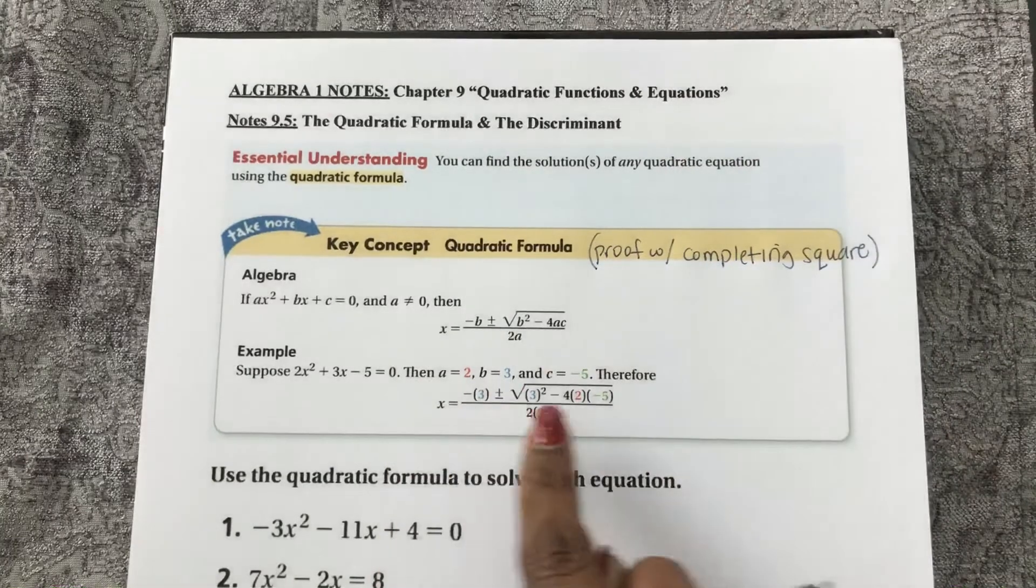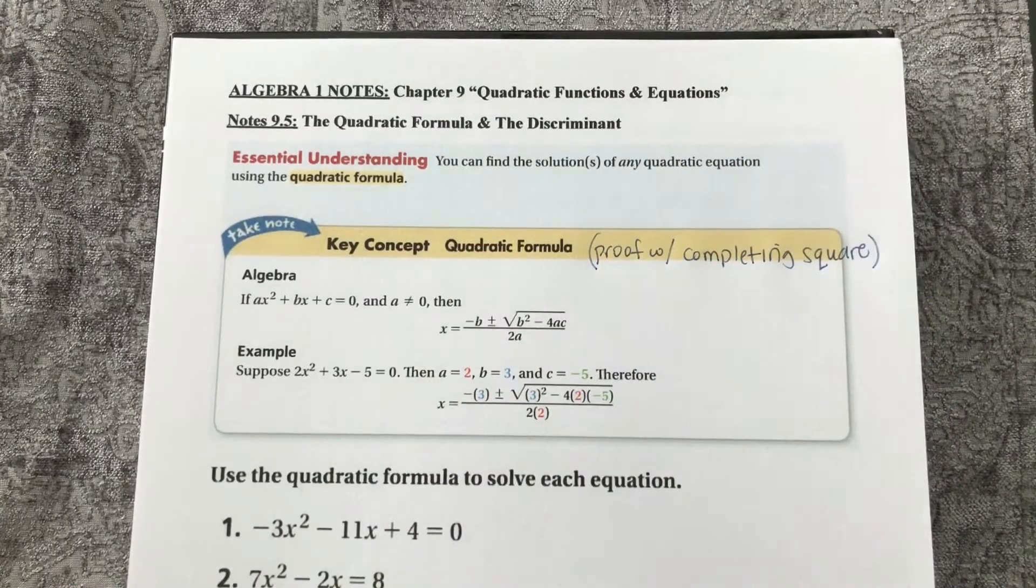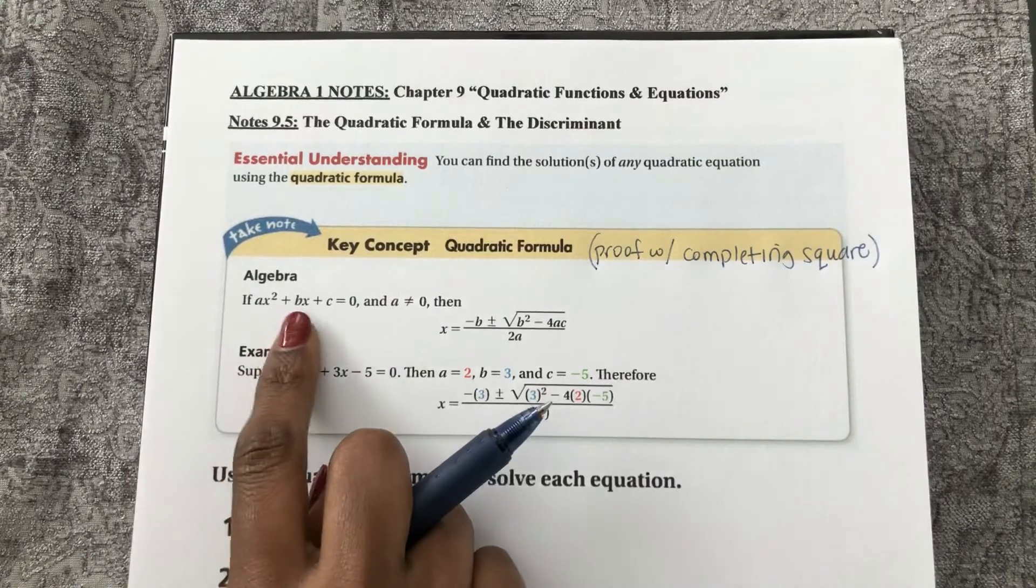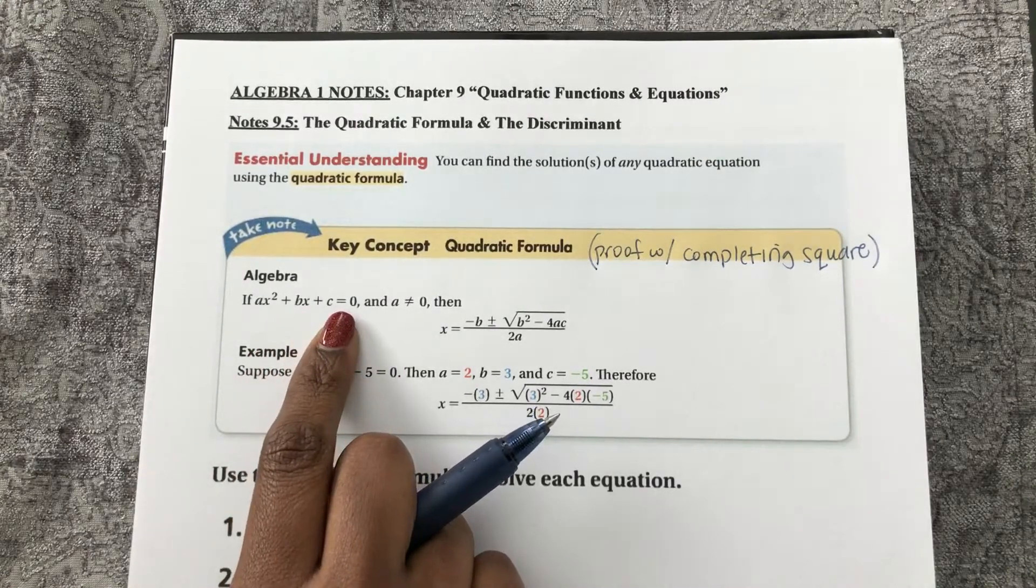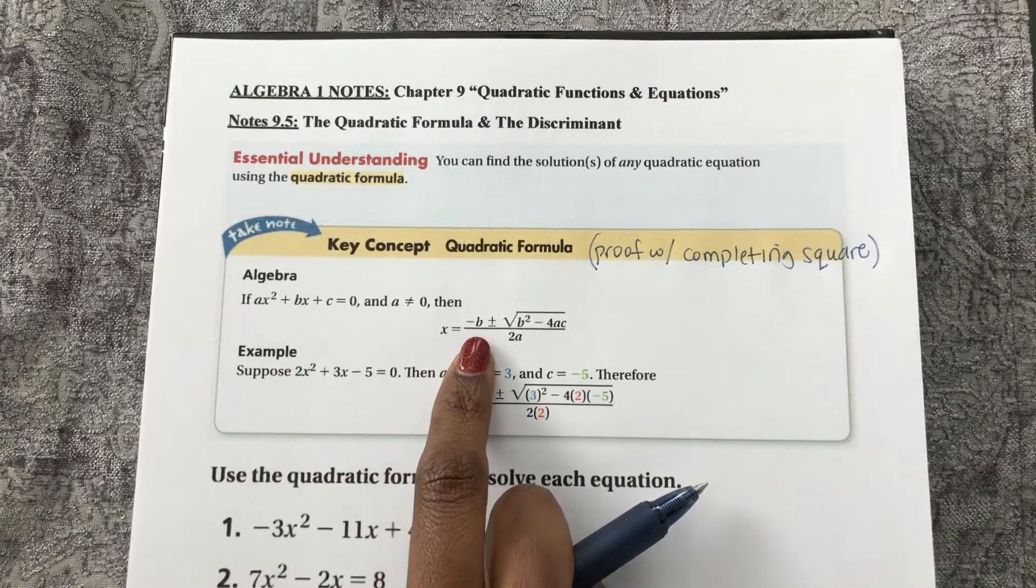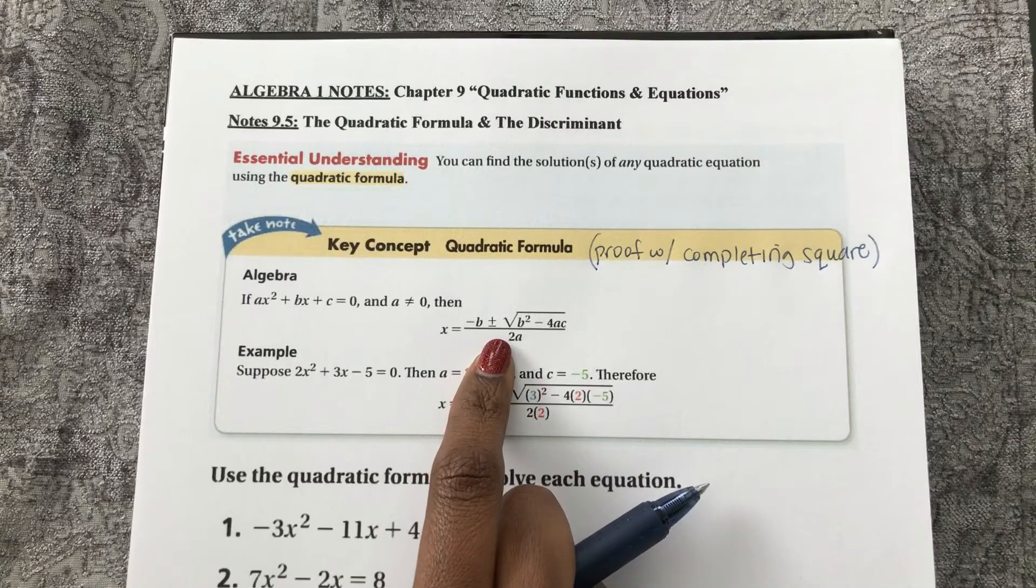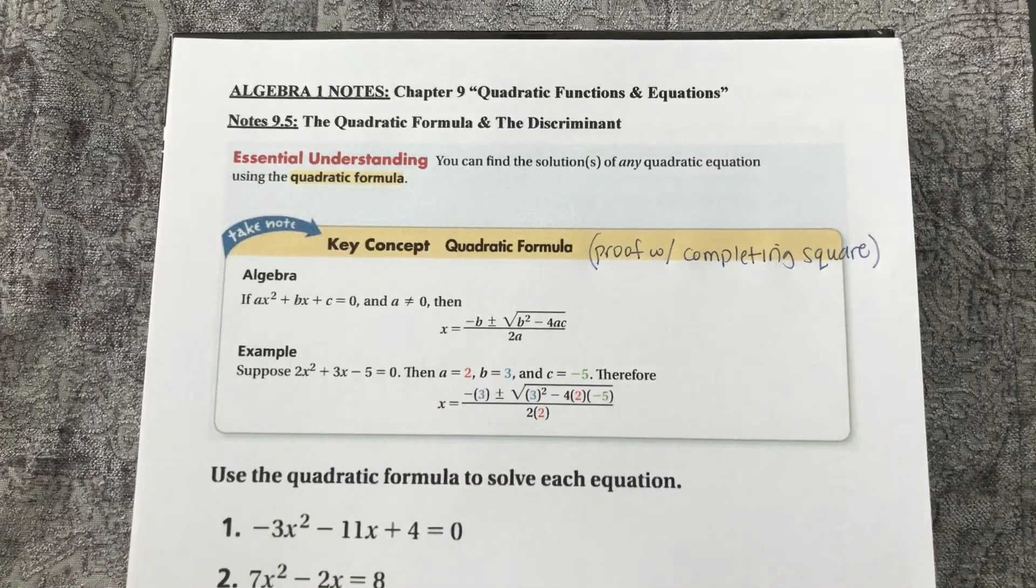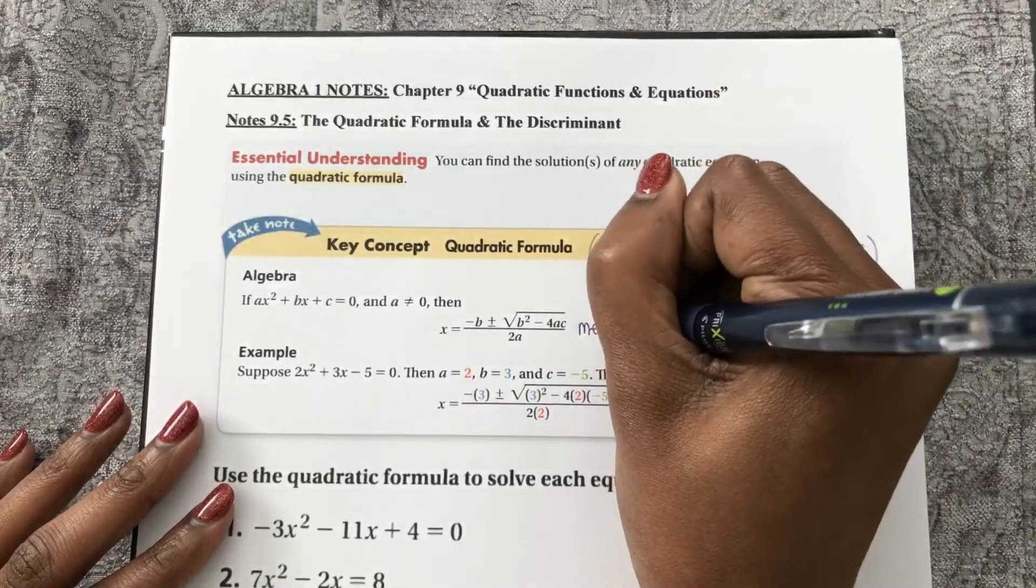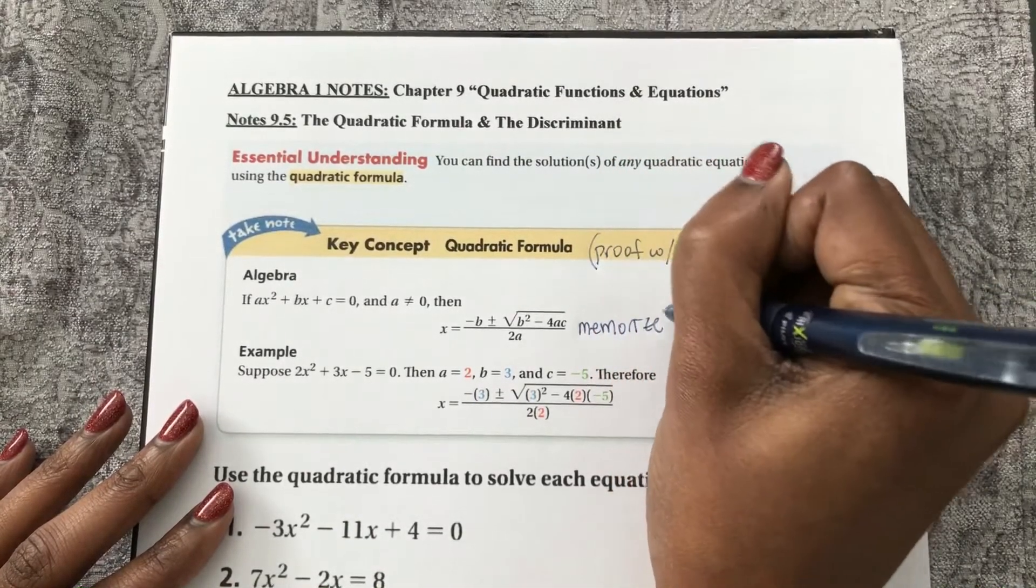There's a way you prove this formula to be true by completing the square. We will watch that in class together. So as long as we know a, b, and c in our equations equal to zero, we can solve for x by being negative b plus or minus the square root of b squared minus 4ac all over 2a. You do need to memorize this formula.